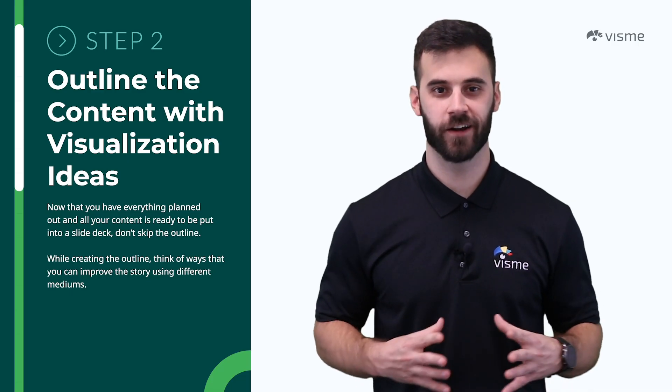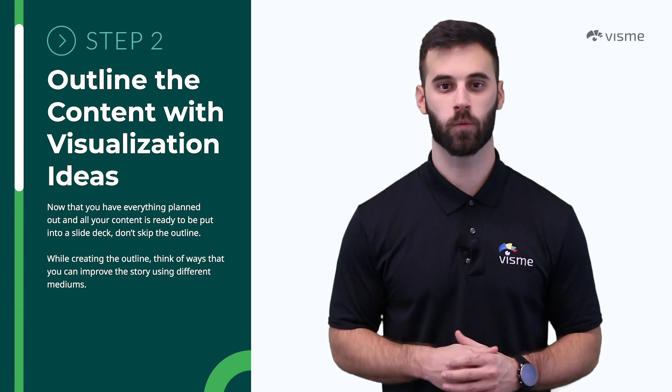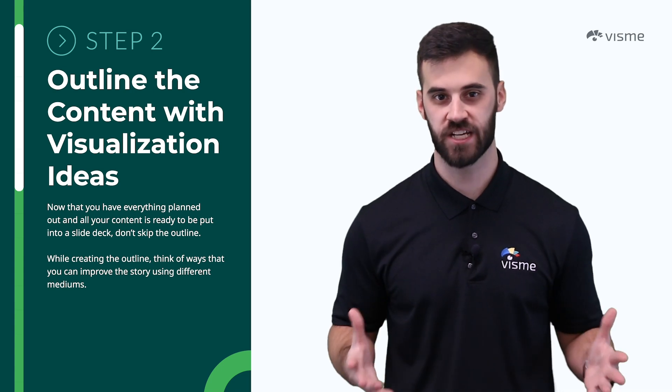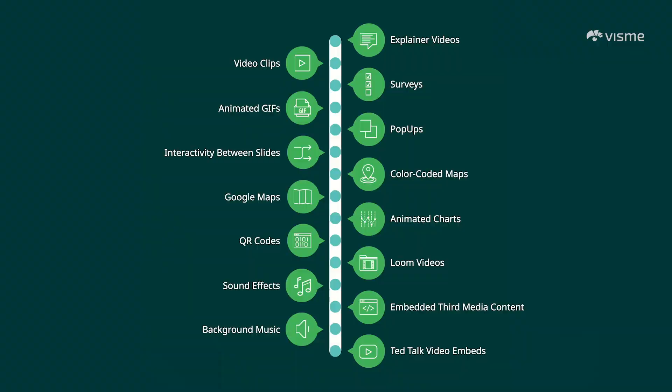Once you have your content figured out, it's time to start considering the different mediums you can use for that content — this is what will make it a multimedia presentation. Here are some ideas: explainer videos, video clips, surveys, animated GIFs, pop-ups, interaction between slides, color-coded maps, Google Maps, animated charts, QR codes, Loom videos, sound effects, background music, embedded TED talks — and that's just a handful. Think outside the box and see what else you can come up with.